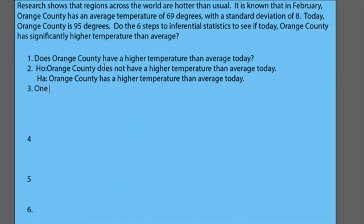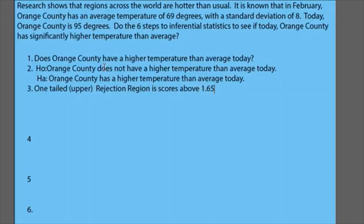Remember, this is a one-tailed test. How did I know that? Because I have the word "higher" — so that's an upper-tailed test. If you don't remember how we do this, go back to the rejection region video. Because it's one-tailed, I'm going to use the numbers associated with the one tail, particularly the upper tail. So the rejection region is scores above 1.65. Notice I didn't say above 1.65 or below negative 1.65 — when it's one-tailed you don't incorporate both. You just do the one because it's a total of five percent.